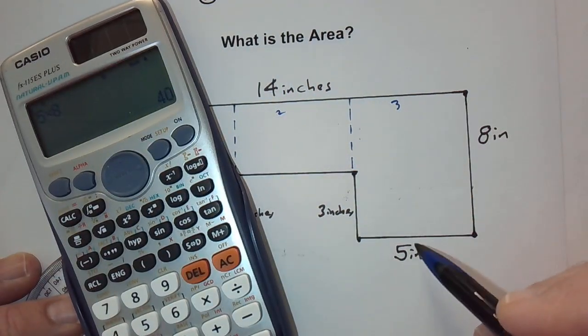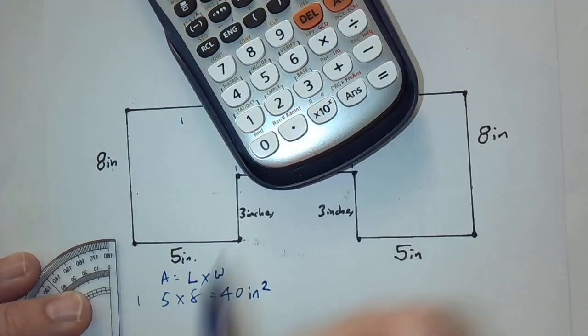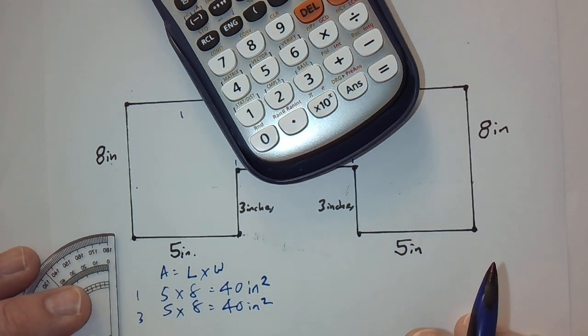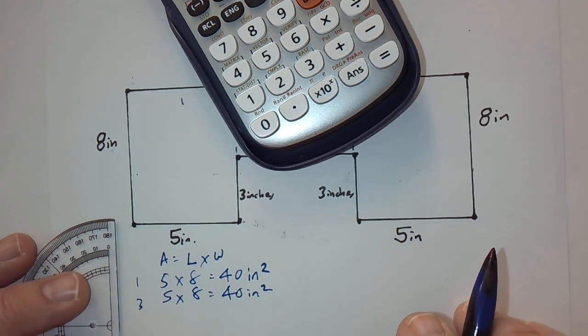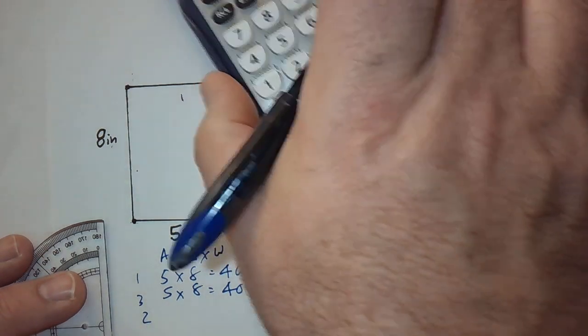If you see number three, it's also five inches times eight inches. So, it's exactly the same, and I'm going to stack it up here, and that's also 40 inches squared. If you're finding this information helpful, go ahead and smash the like button. It'll really help me out and help out the YouTube algorithm to get this out to more people.